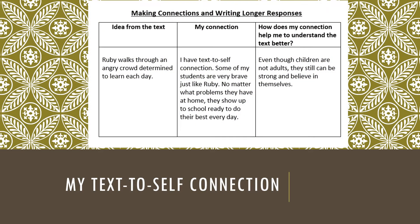Making connections and writing longer responses. Idea from the text: Ruby walks through an angry crowd, determined to learn each day. My connection: I have a text-to-self connection. Some of my students are very brave, just like Ruby. No matter what problems they have at home, they show up to school ready to do their best every day. How does my connection help me to understand the text better? Even though children are not adults, they still can be strong and believe in themselves. This is my text-to-self connection.